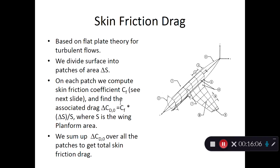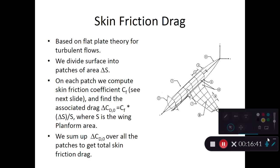Each panel has a certain area computed as a parallelogram — one half the cross product of the diagonal vectors gives the parallelogram area. Multiplying the skin friction coefficient by dynamic pressure and panel area gives the drag force. Summing over all panels and dividing by (½ρV∞² × wing area) gives the total skin friction drag coefficient. This applies equally to the main wing, empennage, and fuselage — each measured from its own leading edge.